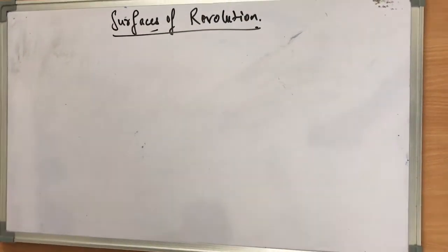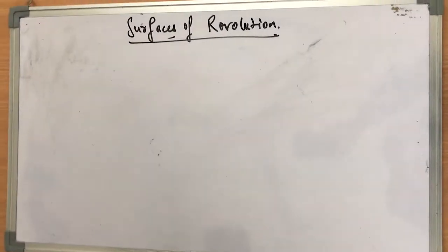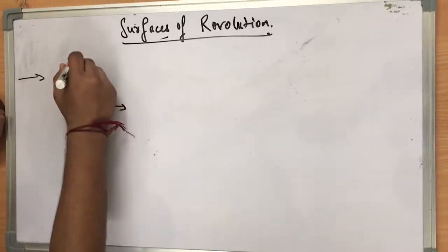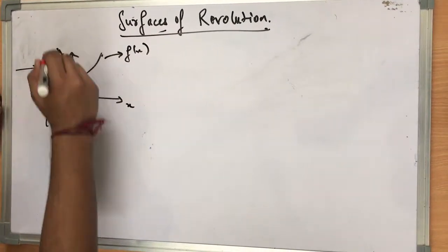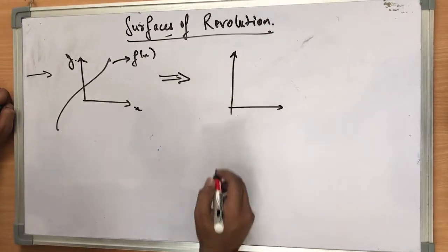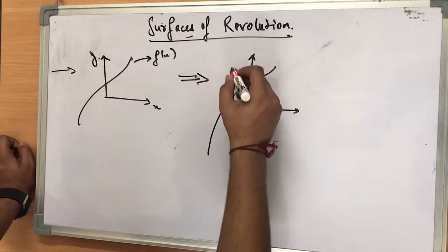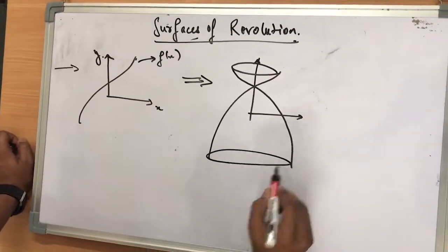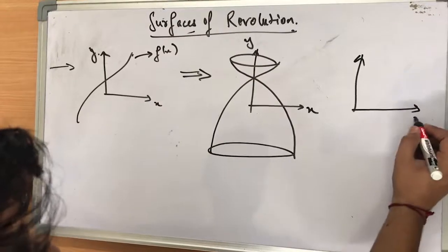Our task is to find the equation of the surfaces of revolution which are formed after rotating given curves about the y-axis or the x-axis. Let's take a curve y = f(x). If I rotate it about the y-axis, I get a surface of revolution. If I rotate it about the x-axis, the surface will look different.